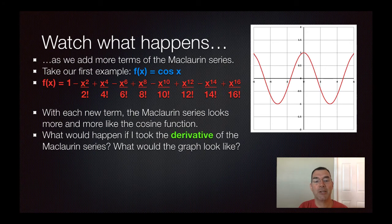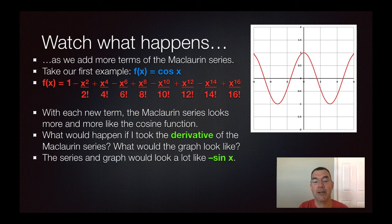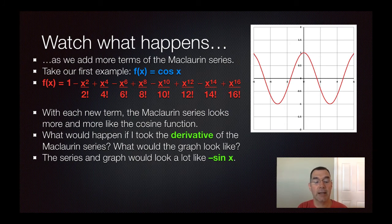If you take the derivative of the series instead of taking the derivative of cosine, the relationship is still the same. The series and the graph would look a lot like the derivative of cosine x, which is negative sine x, so those relationships are still intact. That is it on Maclaurin series. If you have any questions, please let me know and I will see you tomorrow.